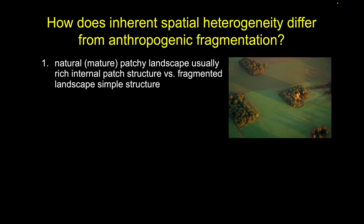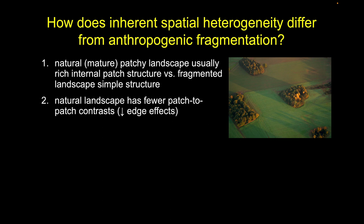An example would be these forest patches, which are very heterogeneous in terms of topography, microbial communities, and all kinds of things. But when we fragment that forest, carve it up, and turn it into agricultural land, it becomes much less structured and much less heterogeneous than the natural system.